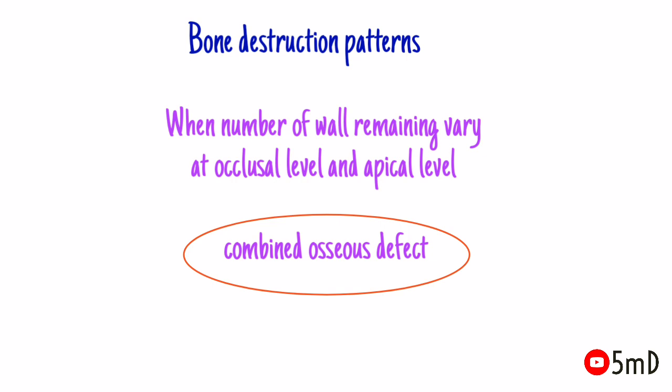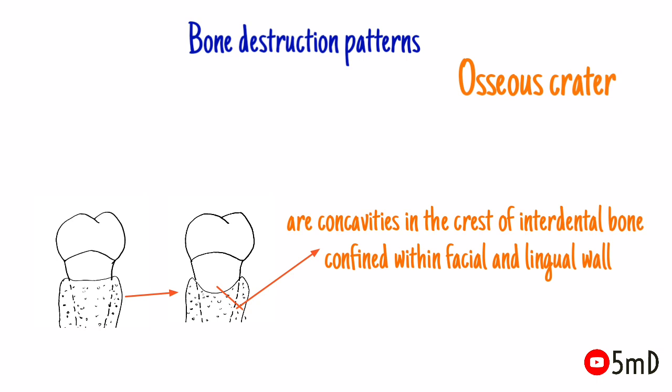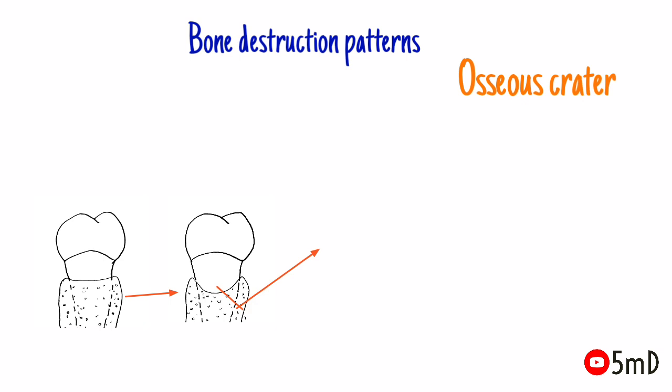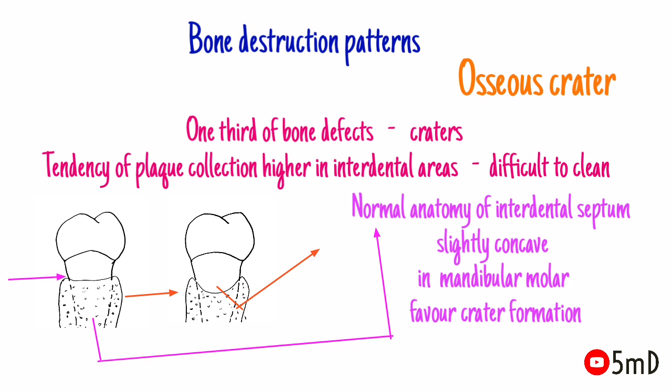Apart from horizontal and vertical bone defects, there are other patterns of bone destruction. Osseous craters are concavities in the crest of interdental bone confined within the facial and lingual walls. About one third of bone defects occurring are craters. The main reason is the tendency of plaque collection in the interdental area, which is difficult to clean. The normal anatomy of the interdental septum being slightly concave in mandibular molars also favors crater formation.